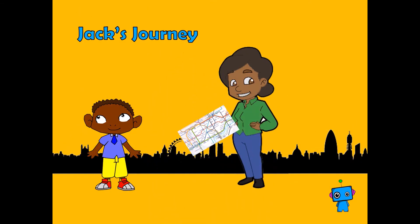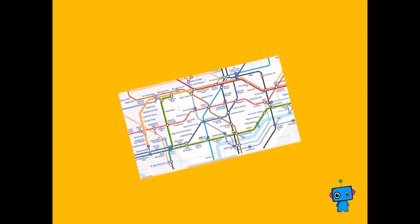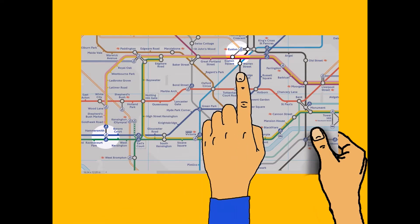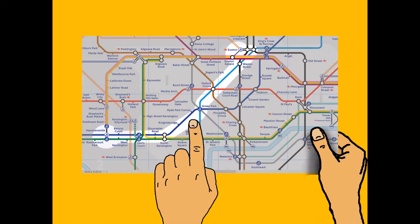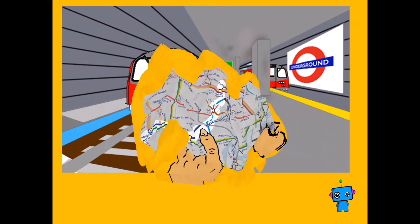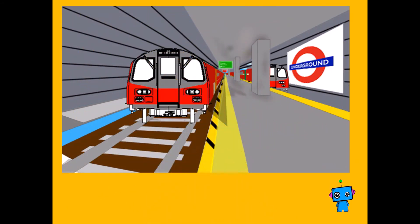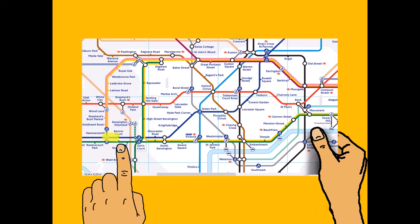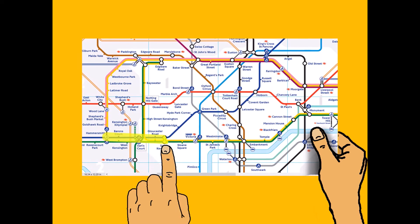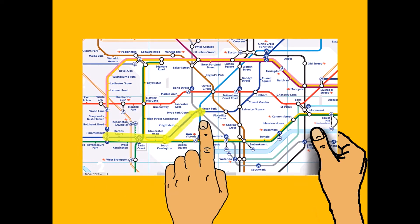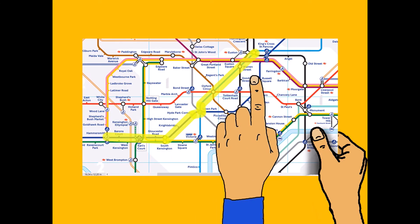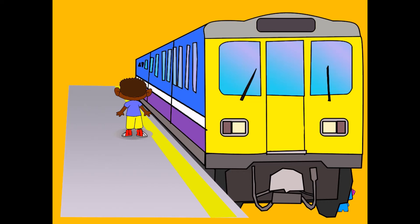Then his auntie gives him a proper tube map. This only shows the lines and the stations, and is very clear. Now he can see that to get from Hammersmith to Euston, it's easiest on the blue lines. When he's on the train, he can use the same map to trace his route as he goes along, because the stations are clearly marked. He knows exactly where he is and exactly when he needs to get ready to get off at Euston Station to catch his train home.